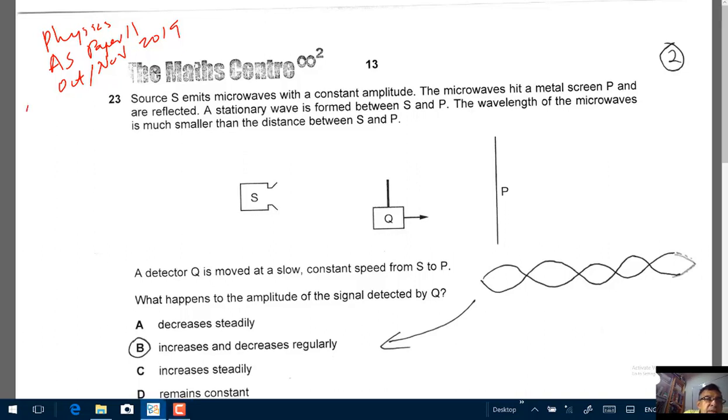They appeared on the multiple choice exam. It's the AS Physics paper, paper 1-1, October/November 2019. So we have questions 23, 24, and 25.